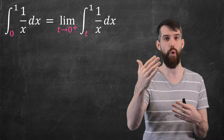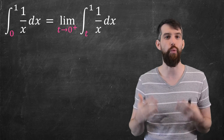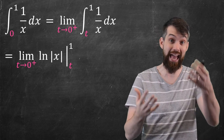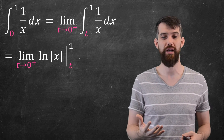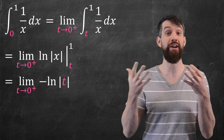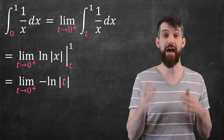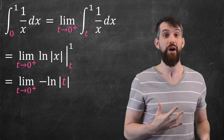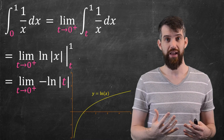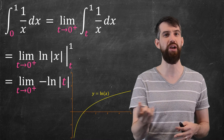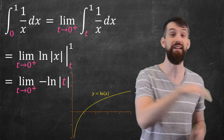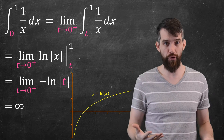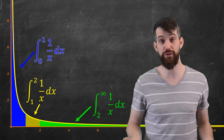With t equal to values like 0.1, 0.01, 0.001, we compute the integral from t to 1 of 1 over x dx. The antiderivative is the logarithm of the absolute value of x. Plugging in 1 and t: logarithm of 1 is 0, so we're subtracting the logarithm of t. As t goes to 0 from the right, the logarithm goes to minus infinity. Because it's minus the logarithm, that's positive infinity. So for 1 over x, the blue region also diverges to infinity.